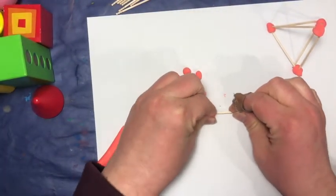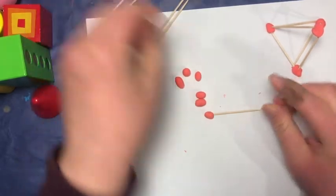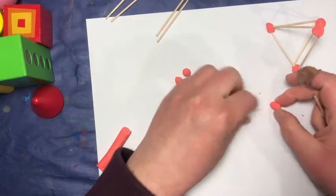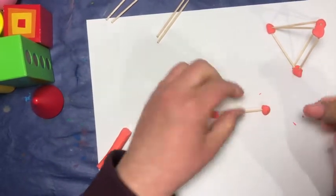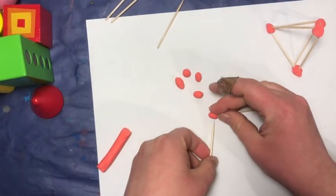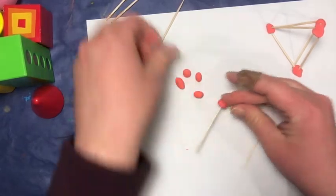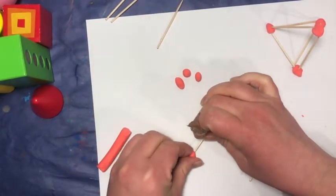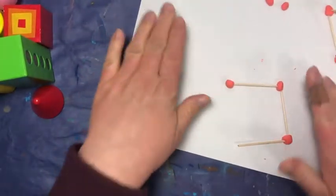So, first thing I want to do, I am going to make a cube. So, first thing we're going to do is make a square.